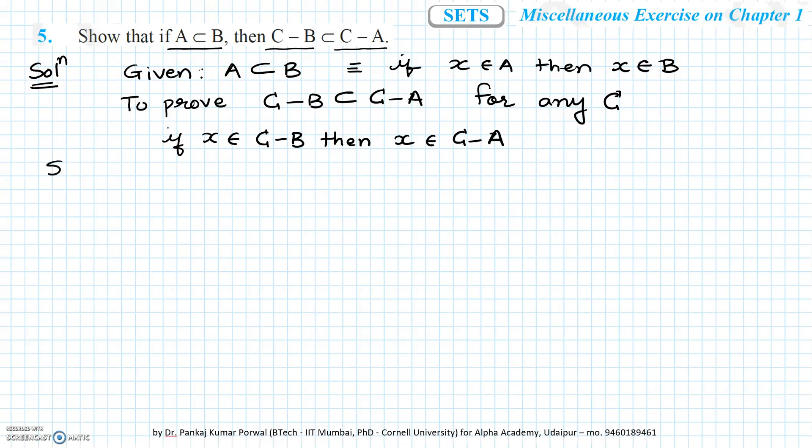To start the proof we will say there is some x which belongs to C minus B and now logically we have to show that this x will belong to C minus A also.